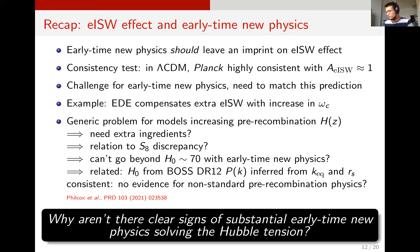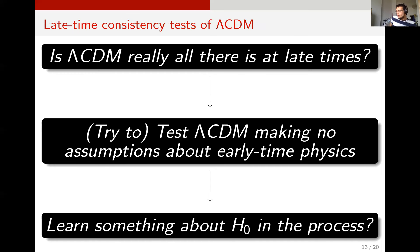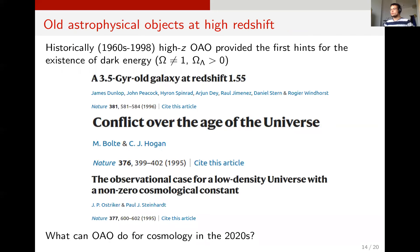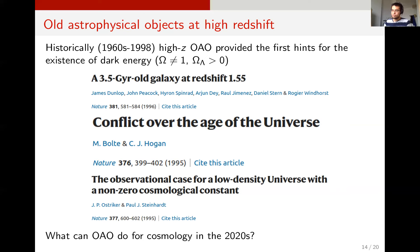So far this was for early time new physics. What about late times? One question which has always bothered me is: is Lambda CDM really all there is at late times? I would like to test Lambda CDM making little to no assumptions about early time new physics and possibly learn something about H0 in the process. One way to do this is to use the ages of very old astrophysical objects. These are interesting historically: between the 1960s and 1990s, before the discovery of the accelerating universe from supernovae, old objects at high redshift provided the first hints for the existence of dark energy.